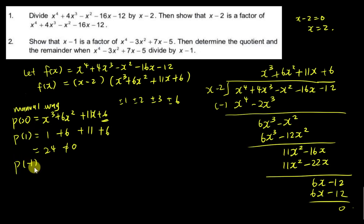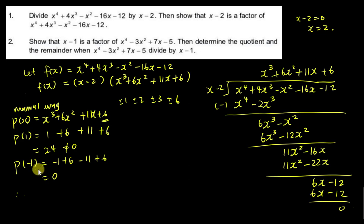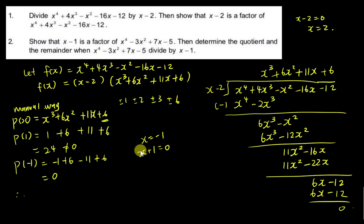I try p(negative 1): negative 1 plus 6 minus 11 plus 6. You can see negative 12 plus 12 equals 0. So when x equals negative 1 gives 0, the factor is not (x minus 1) — you move negative 1 to the other side: x plus 1 equals 0. So (x plus 1) is a factor of p(x).